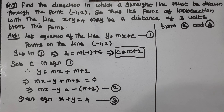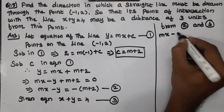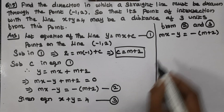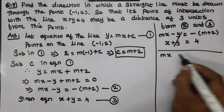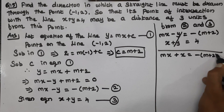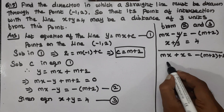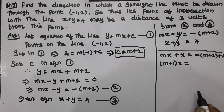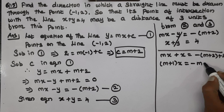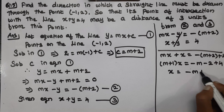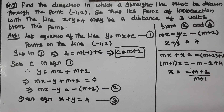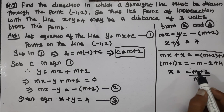Comparing and solving: the first equation is mx minus y equals minus of m plus 2, and the second equation is x plus y equals 4. Adding these, y cancels. We get mx plus x equals minus m plus 2 plus 4, which gives x(m plus 1) equals minus m plus 2 plus 4.